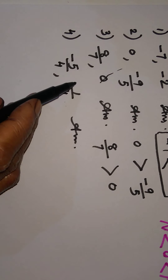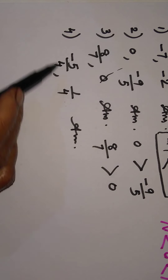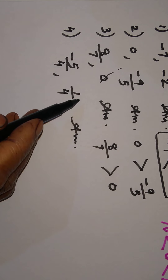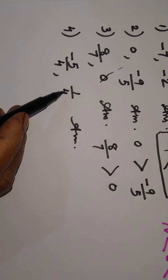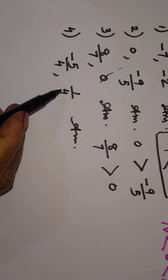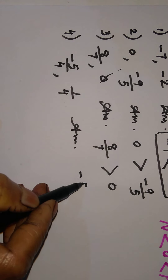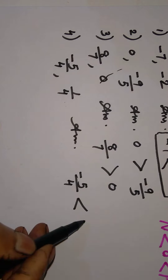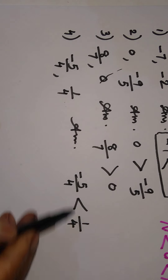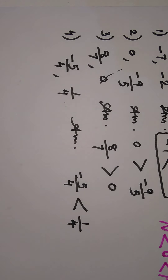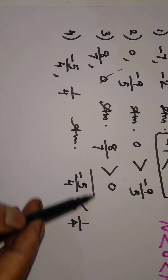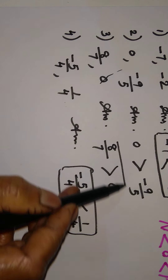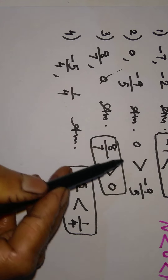Next question: minus 5 upon 4 and 1 upon 4. Here we have a negative number and a positive number. Positive is always bigger than negative. Minus 5 upon 4 is negative and 1 upon 4 is positive. So the answer is direct. I am putting the answer in a box so that it can be easily identified.